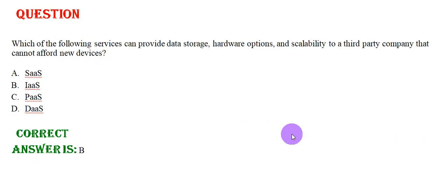Which of the following services can provide data storage hardware options scalability to a third-party company that cannot afford new devices? Option A: SAAS. Option B: IAAS. Option C: PAAS. Option D: DAAS. The correct answer is Option B.